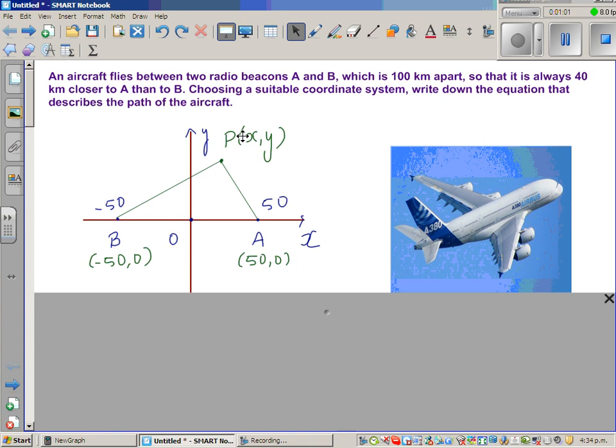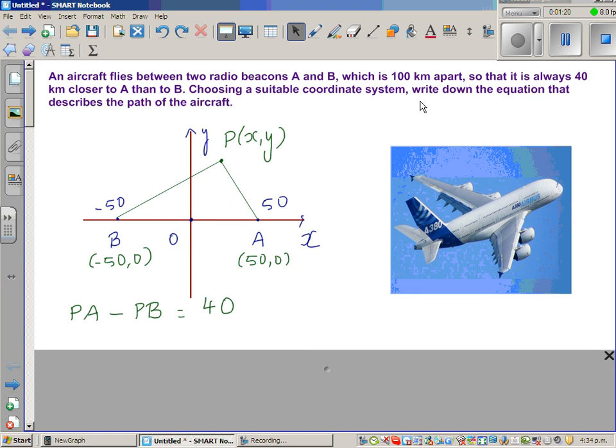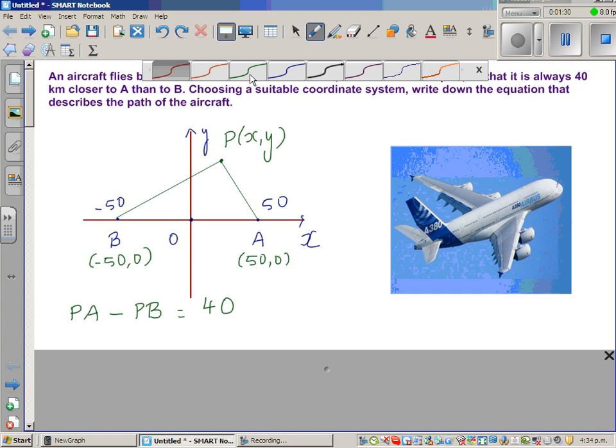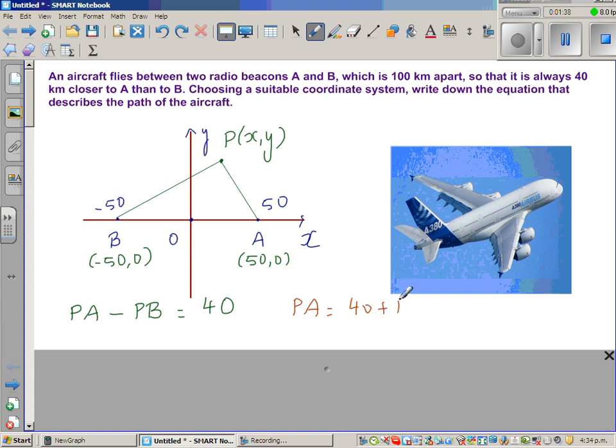Now P is an arbitrary point anywhere and the characteristic is that A is closer to P than B by 40 kilometers. So how can we write that? We can say that the distance PA minus PB is 40, or this could also be written as PA equals 40 plus PB. They are one and the same statement.